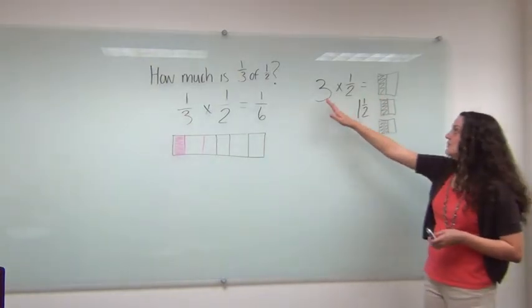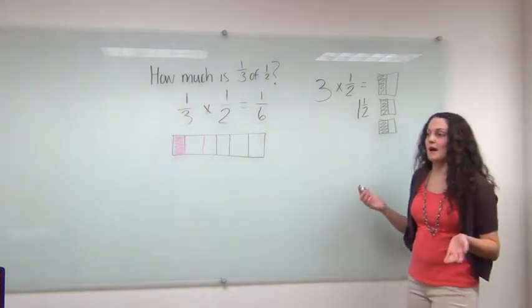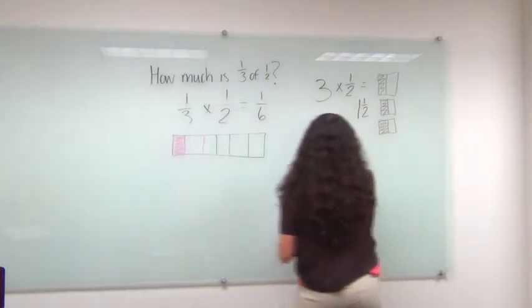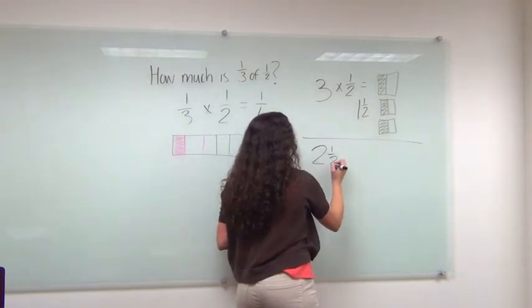So here it's three copies of a half. What about two-and-a-half halves? Two-and-a-half times a half.